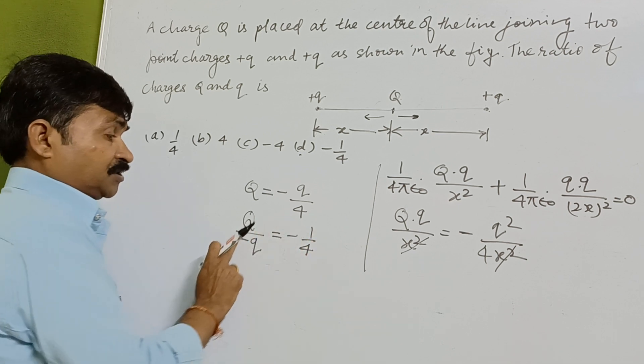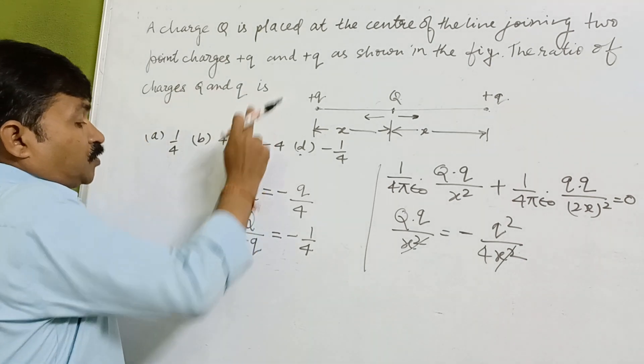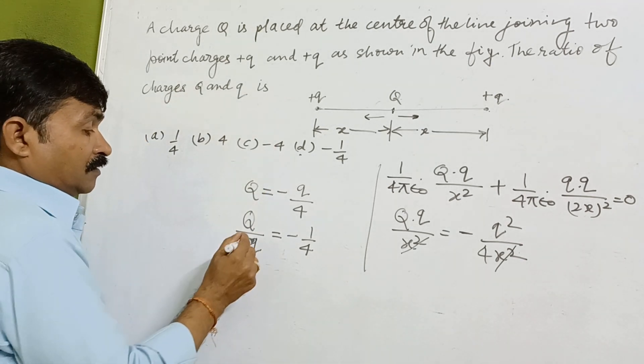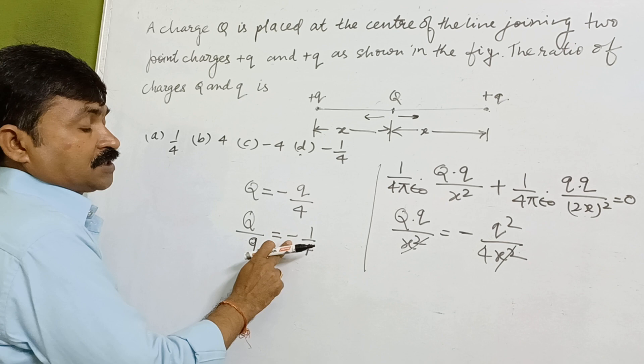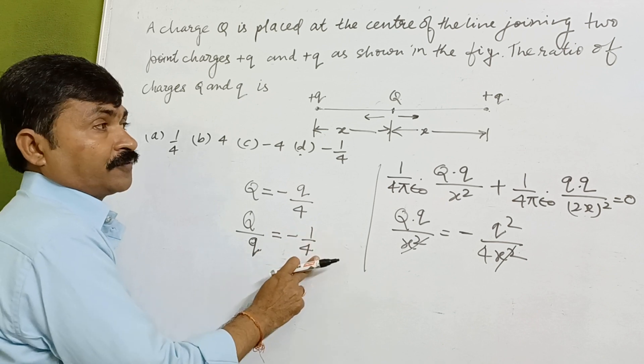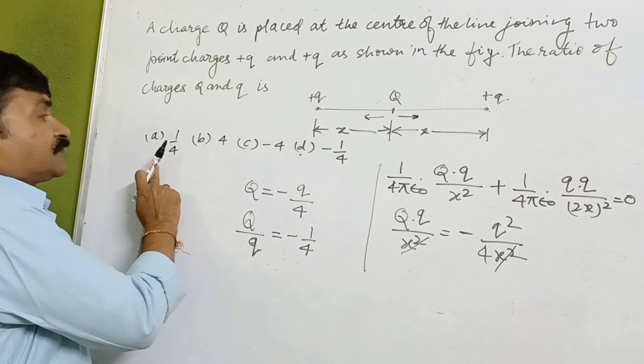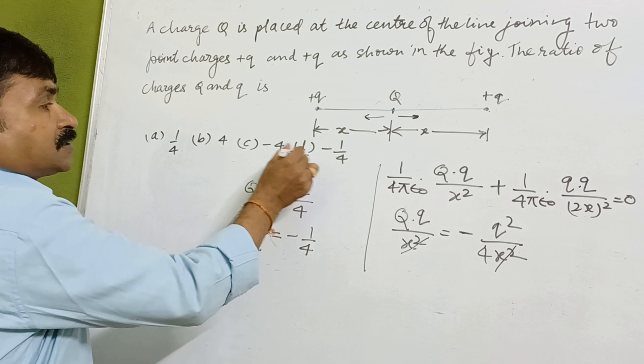The ratio of the charge Q and Q is which equals to minus 1 upon 4. So if we go through the options, we are having this D is the correct answer.